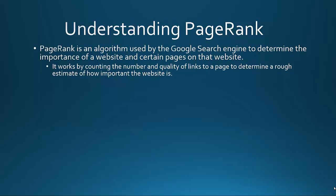PageRank is basically how Google views your site or a site on the internet, and it typically goes from a scale of 0 to 10, with 10 being the highest. Most websites are usually going to have a PageRank between 0 and 5. Google looks at how many links are coming in to a website and determines based on that count whether the site is quality enough.